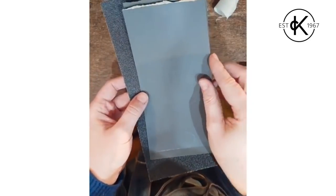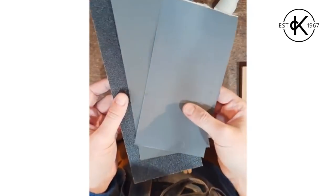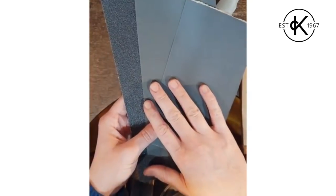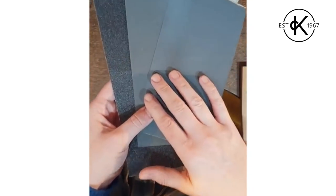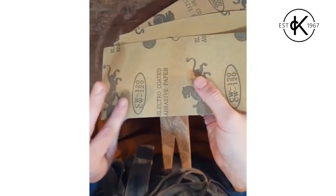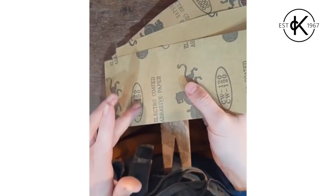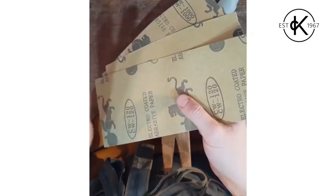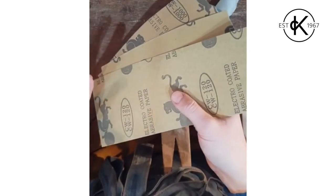When we do sanding, we use wet and dry paper or emery paper. So it's the same as sandpaper—quite often I refer to it as sandpaper—but the difference is it has a much stronger backing and it comes in much more grades of coarseness compared to normal orange DIY sandpaper.